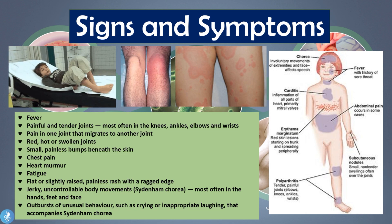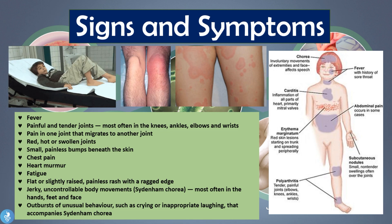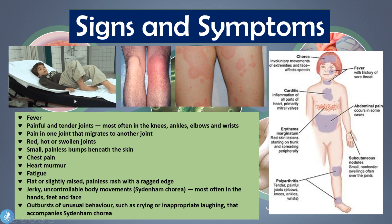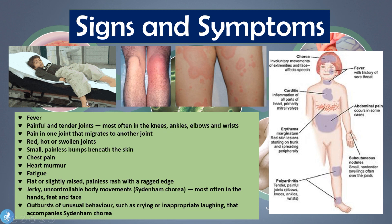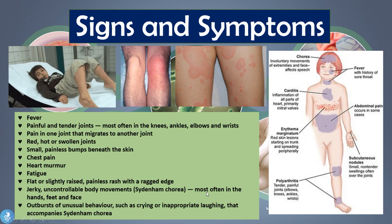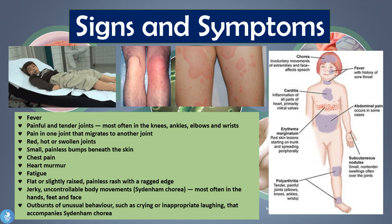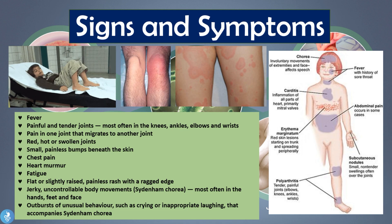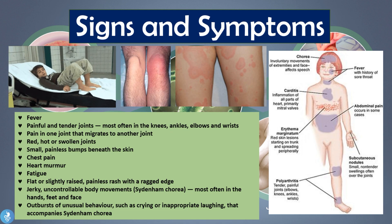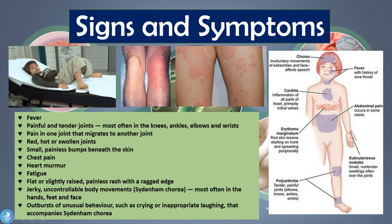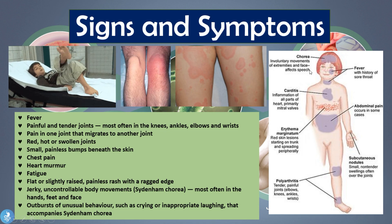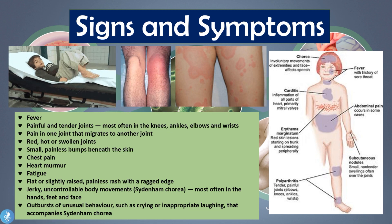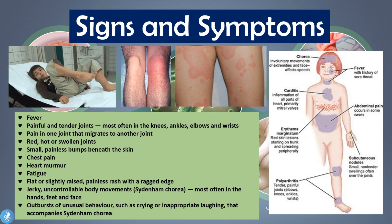Patients will also suffer jerky uncontrollable body movements known as Sydenham's chorea, which most often affects the hands, feet, and face. They will also have outbursts of unusual behavior such as crying or inappropriate laughing that accompanies the Sydenham's chorea. This all stems from inflammation of the brain, causing involuntary movements of the extremities and face affecting speech, as well as inappropriate behavioral outbursts.